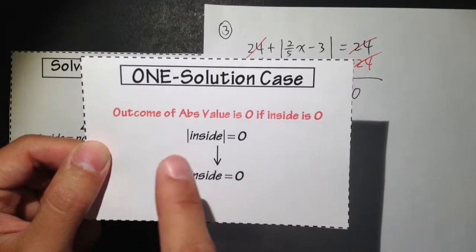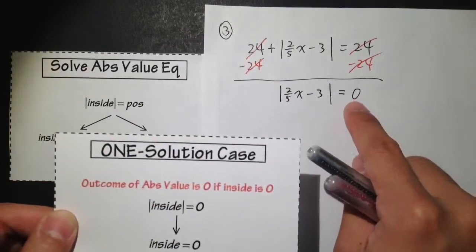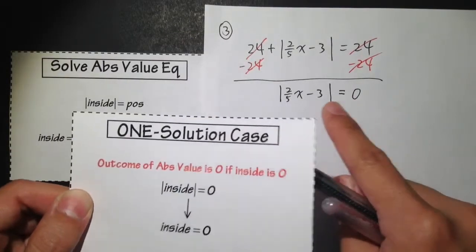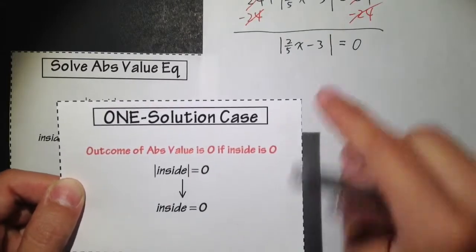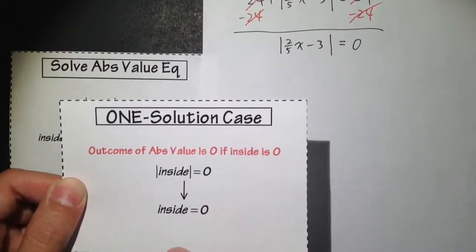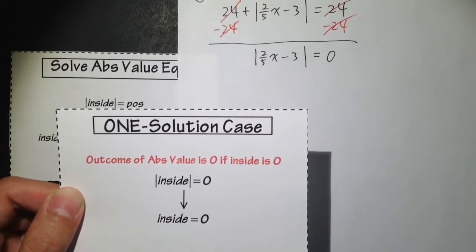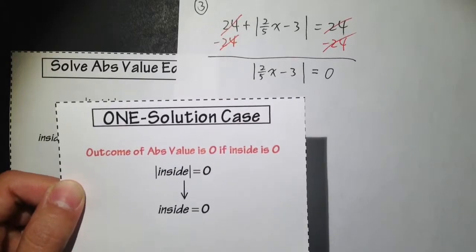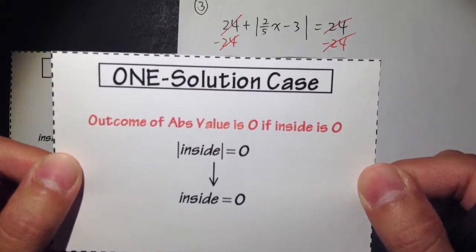Because the outcome of absolute value, whenever it is equal to 0, this only works if the inside is equal to 0. You are only going to get one answer for this equation. This is the one-solution situation.